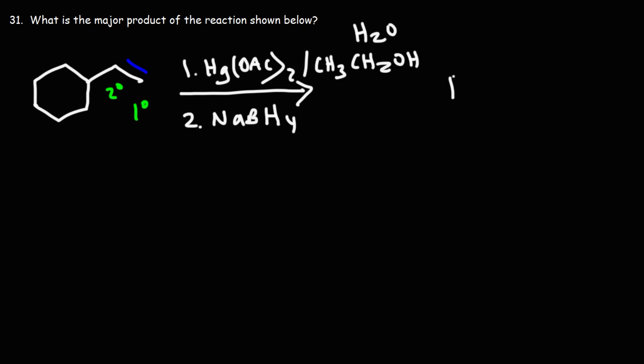So the end result for this reaction is going to be this product. The double bond will go away and we'll get this product here. So we're going to get an ether with Markovnikov regioselectivity.